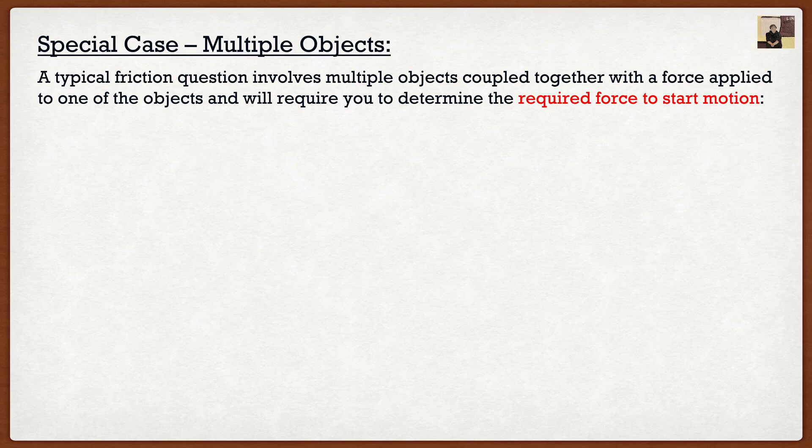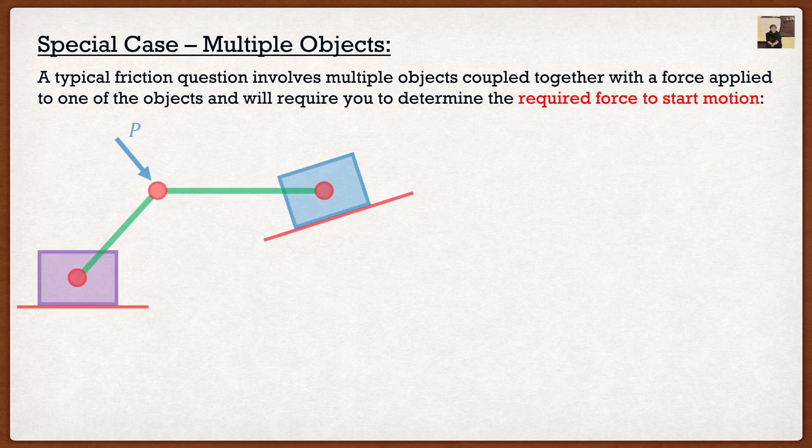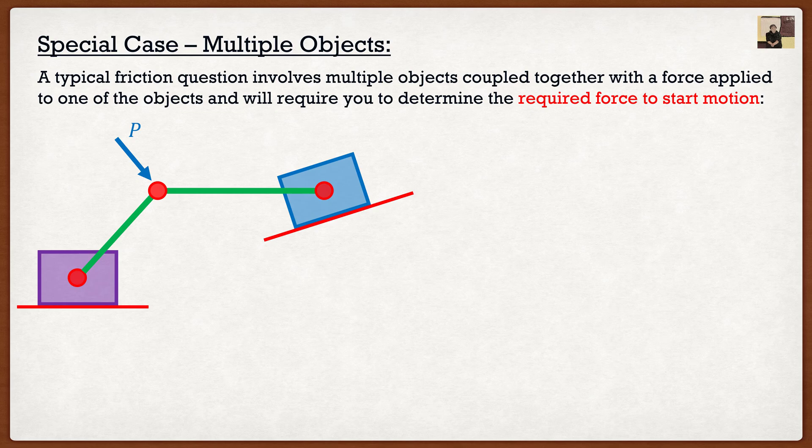And again, the question will be what is the force required to basically begin the motion? Let's say that we had this scenario where we had basically two links connected to two boxes on surfaces, and we were to apply force kind of to the middle of the link. Well intuitively, we know that this is basically going to create three systems: we have the system in the middle where we have P, F1, and F2, and then we have two systems for our boxes which are going to have friction.